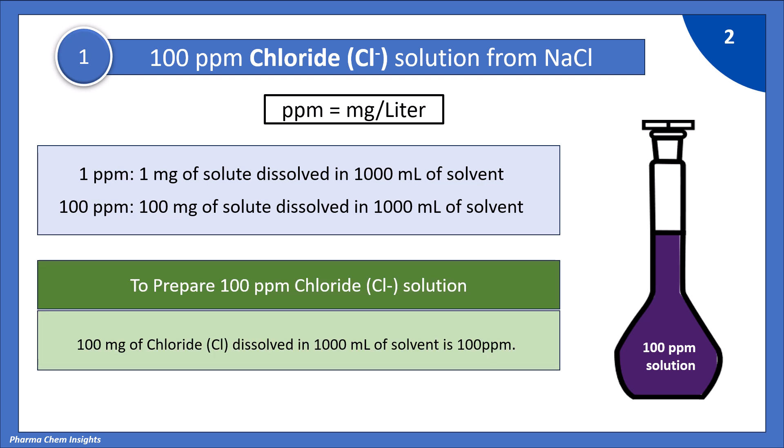So, we need to prepare 100 ppm chloride solution. For that, 100 mg of chloride ions should be dissolved in 1000 ml of solvent to get 100 ppm.